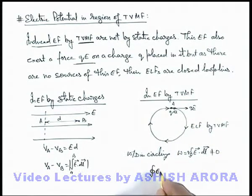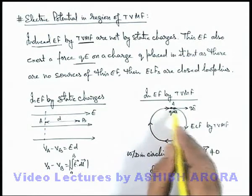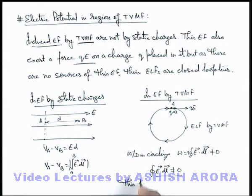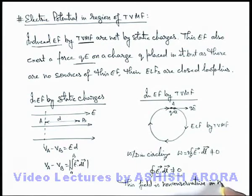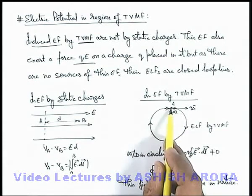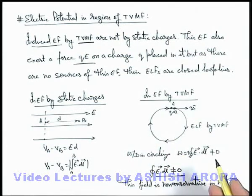Here, the closed loop integration of E dot dl, which we generally consider as the potential difference from one point back to itself, is becoming non-zero. This means the field is non-conservative in nature. For free charges moving in this field, the work done in circling and coming back to the same point is non-zero, and as it is a finite quantity, we can say this field is non-conservative in nature.